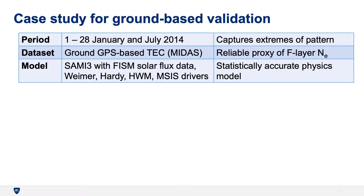As a case study for ground-based validation, we selected January and July 2014 to capture the extremes of the pattern in the most recent solar maximum. As a data set, we use ground-based GPS TEC from the MIDAS algorithm. We use TEC because it's a reliable proxy of the F-layer electron density. The model, SAMe-3, uses FISM solar flux data, the Weimer potential, the Hardy precipitation, the HWM winds, and the EMSIS neutral composition. This model is completely independent from the data, but is a statistically accurate representation of the physics.